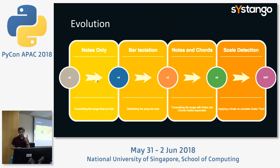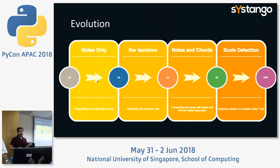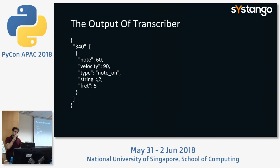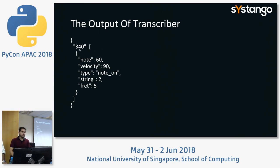Finally, in V6 — which is work in progress — we are trying to find the actual starting point of the guitar through scale detection. Once you find the scale of the song, you get the key, and once the key is obtained, you can find the starting point of the guitar fret locations and proceed forward with tablature generation. Our goal was to produce output like this: at 340 milliseconds, note 60 is to be played from the audio output with amplitude of 90 — it's a note-on event. We computed the string and fret for this and that was the output generated.